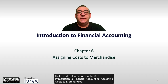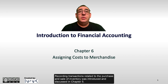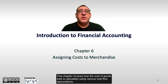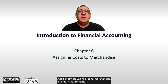Hello and welcome to Chapter 6 of Introduction to Financial Accounting: Assigning Costs to Merchandise. Recording transactions related to the purchase and sale of inventory was introduced and discussed in Chapter 5. This chapter reviews how the cost of goods sold is calculated using various cost flow assumptions. Additionally, issues related to merchandise inventory that remains on hand at the end of an accounting period are also explored.